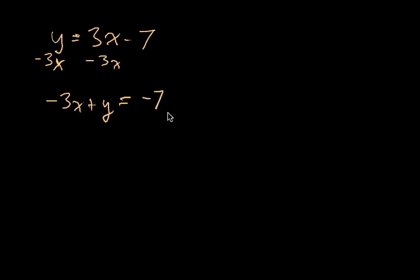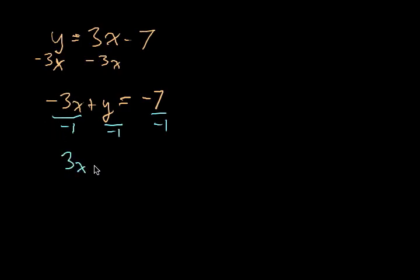You may say this looks like standard form, but a lot of times people don't like that minus sign there. So what we're going to do is divide everything by negative 1 to get rid of that minus sign. This gives us 3x minus y equals positive 7, and this is standard form.